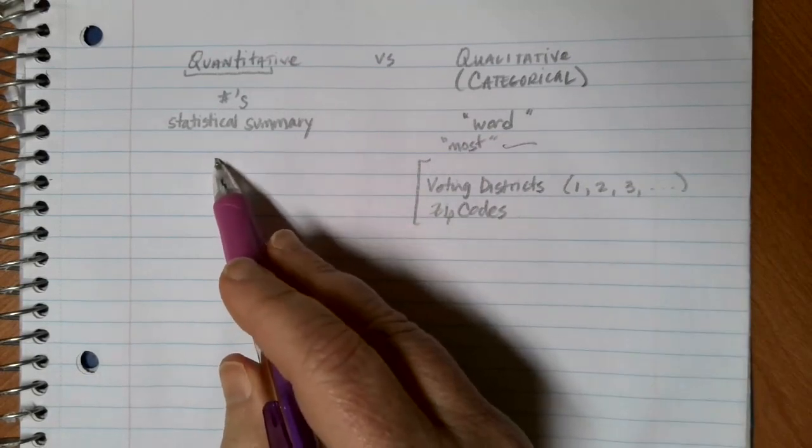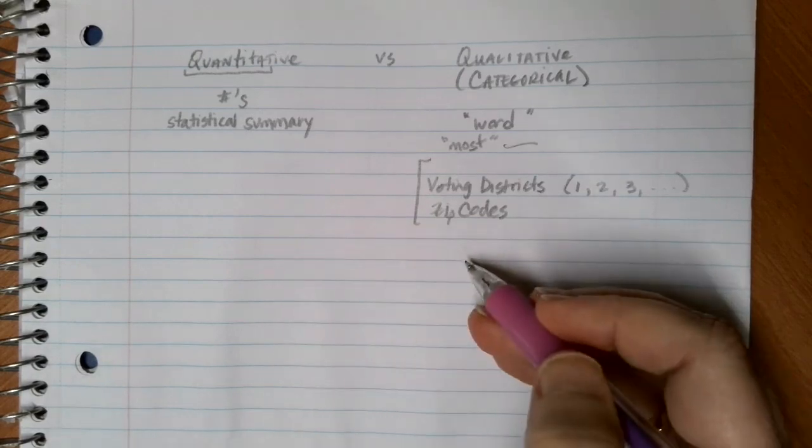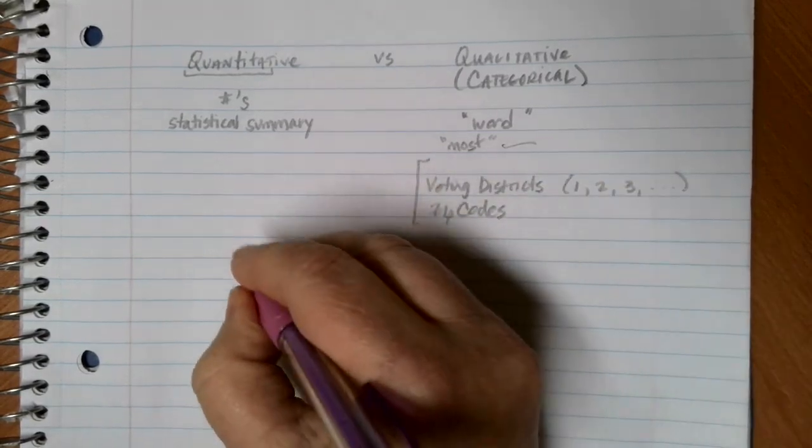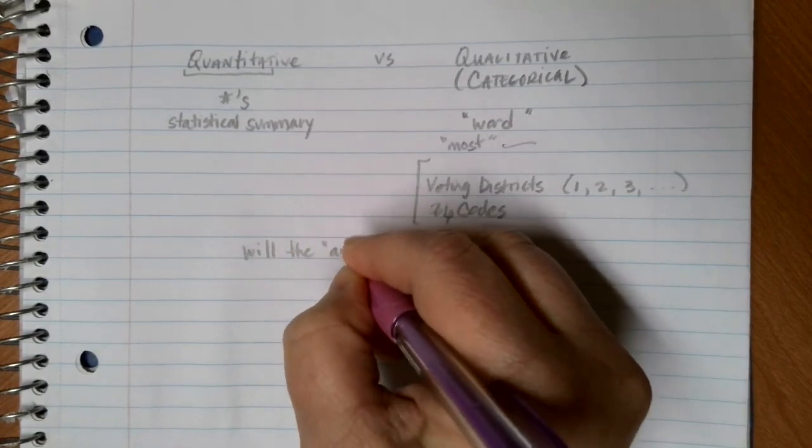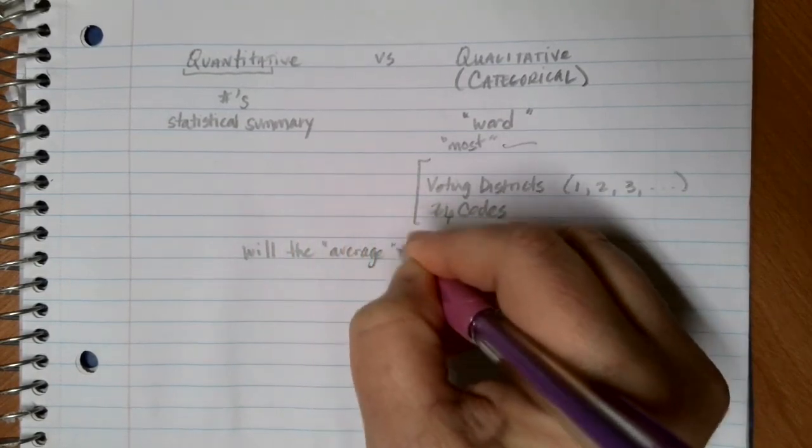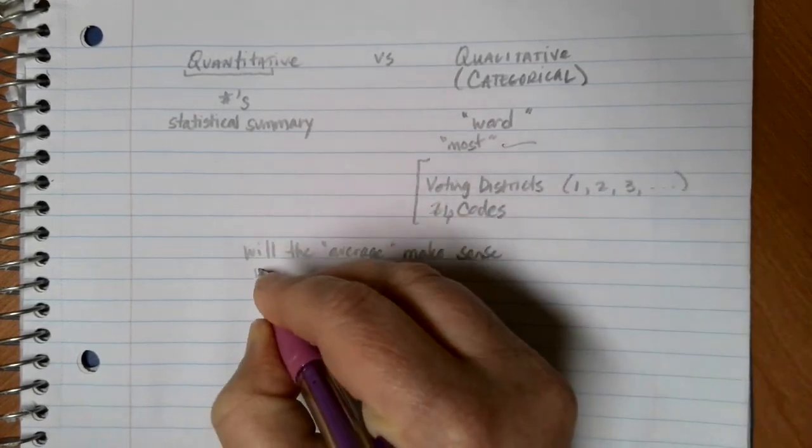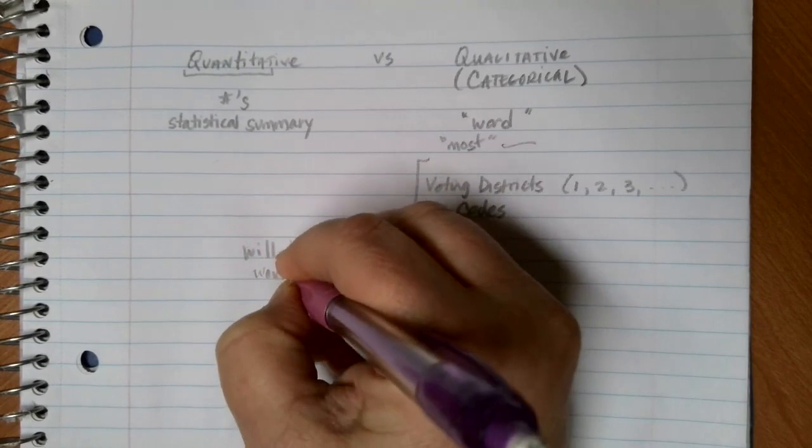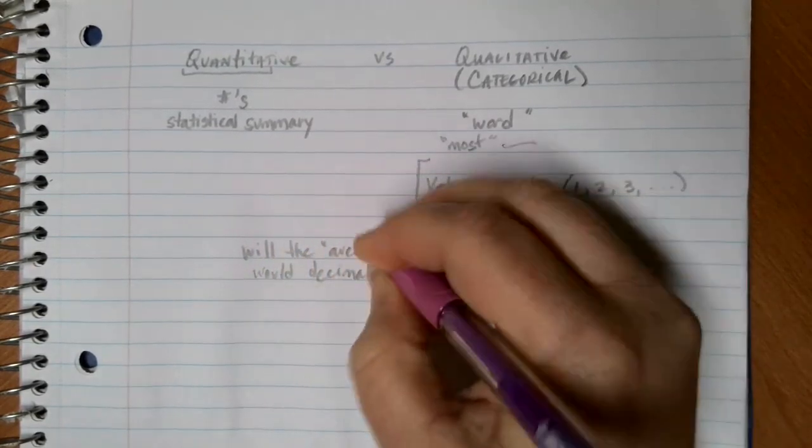Being able to say if I take the average of this will this make sense, or sometimes something like would partial or decimal values have any meaning, is sometimes a helpful question to ask.